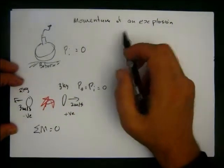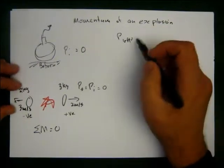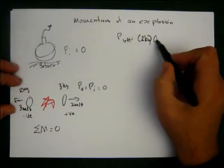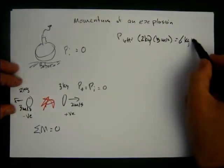So, P_left equals 2 kg times 3 meters per second equals 6 kg meters per second.